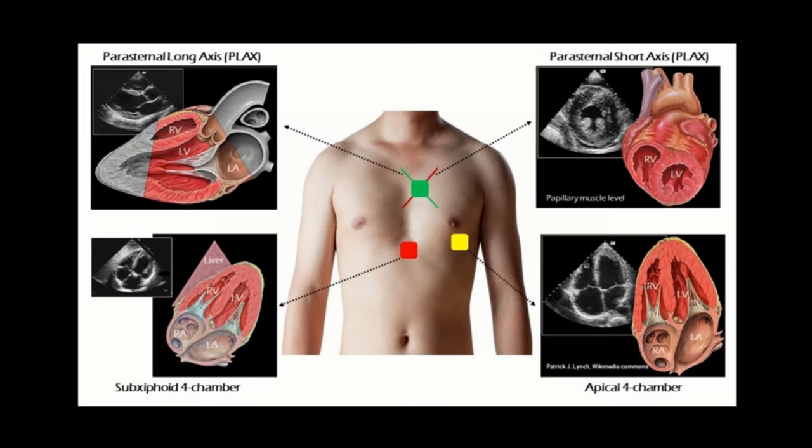The initial focus of the residents should be on cardiac chamber structure and dimension, systolic function, and presence or absence of any pericardial effusion or masses. Next they can learn the assessment of valves, diastolic function, and subsequently move on to examination of children for congenital cardiac diseases, which is the most difficult aspect to learn in echocardiography.